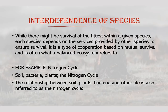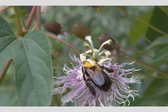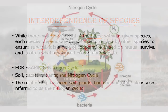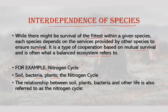While there might be survival of the fittest within a given species, each species depends on services provided by other species to ensure survival. It is a type of cooperation based on mutual survival, and is often what a balanced ecosystem refers to. For example, this kind of interdependence can be seen in the nitrogen cycle, where soil bacteria, plants, and other organisms interact and depend upon each other.